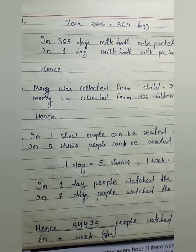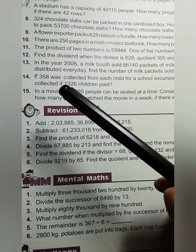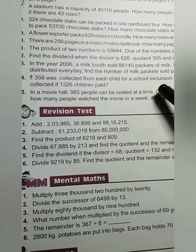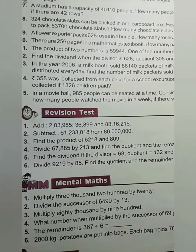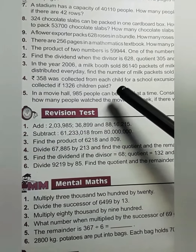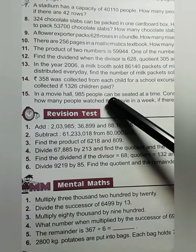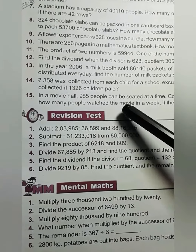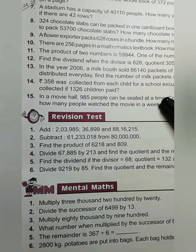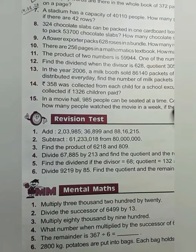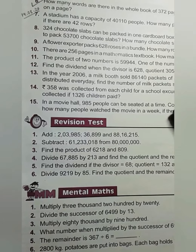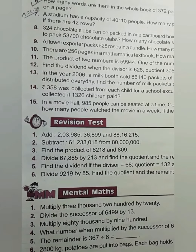14th number: Money collected from one child equals 358 rupees. Then money collected from 1,326 children — you multiply the two given numbers. Then you get your answer.